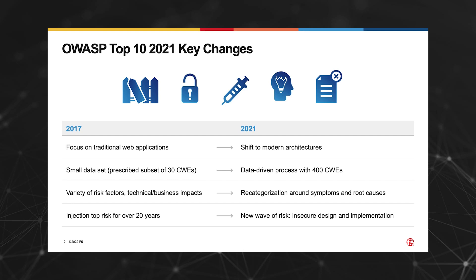It is important to note that the OWASP top 10 goes well beyond basic or checkbox-level security. The top 10 now encompasses modern application architectures that leverage cloud, containers, APIs, mobile apps, and complex software supply chains and CI/CD pipelines. OWASP also emphasizes a data-driven methodology in its 2021 update to capture more weaknesses and potentially more vulnerabilities, as well as giving more credence to security practitioner opinions through its community survey.